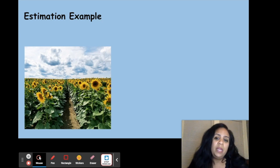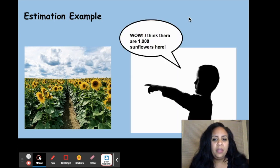For example, one day a boy named Johnny went on a farm trip with his class. He told his teacher, 'I think there are a thousand sunflowers here.' The teacher asked why he said that. Johnny explained, 'I counted 10 sunflowers in this row and there are a hundred rows. A hundred rows of 10 sunflowers equals 1,000 sunflowers.' That is what estimation is - making an educated guess using math strategies you already know.